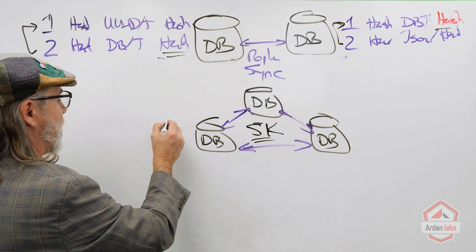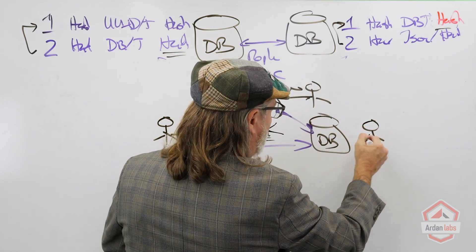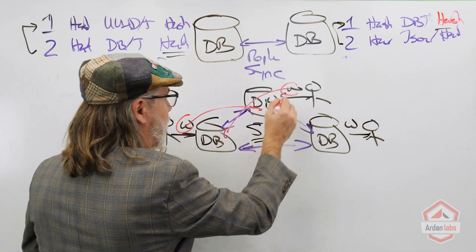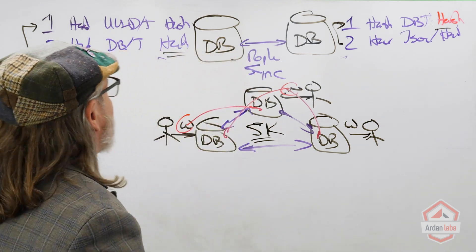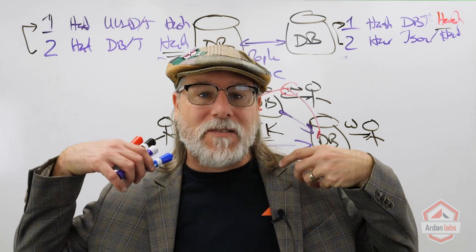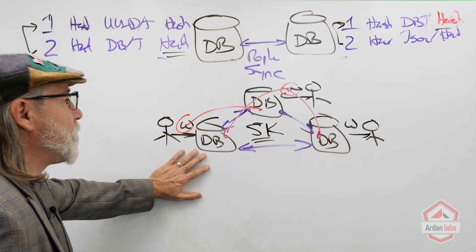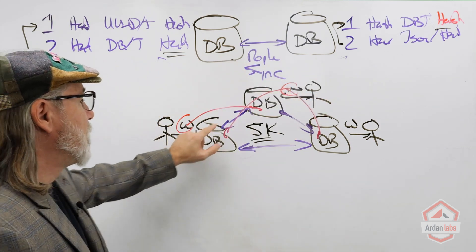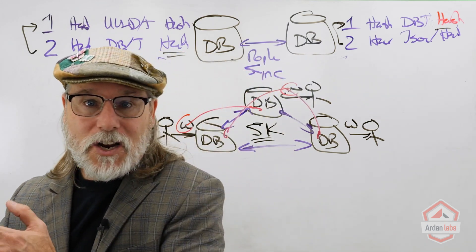I want people to be able to write to any database, and then those writes get synced up while maintaining the order of the writes. Every database, if we open it up, has to be identical, and the audit trail has to be identical. There's a lot of concurrency going on here — concurrency meaning out-of-order execution — and yet we've got to bring order to the out-of-order.